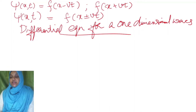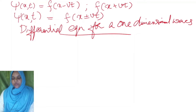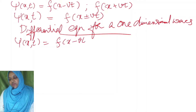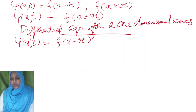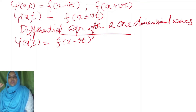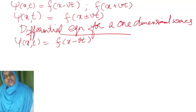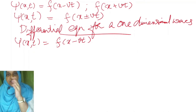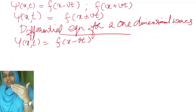Now we are going to derive the one-dimensional wave equation. If a wave is propagating along the positive x-axis, it can be represented as ψ(x, t) = f(x − vt), where x is the position, v is the velocity, and t is the time. We are going to differentiate ψ with respect to x as well as with respect to t. Since ψ is a function of both position and time, we must consider one variable as constant and differentiate with respect to the other. This is known as partial differentiation, so we take partial derivatives.